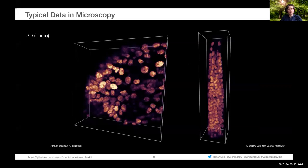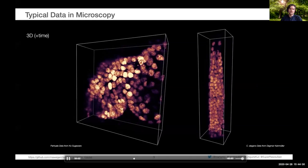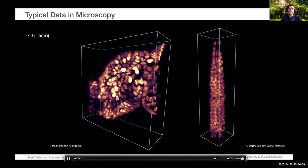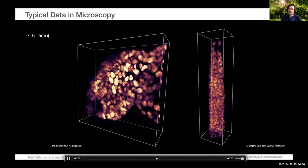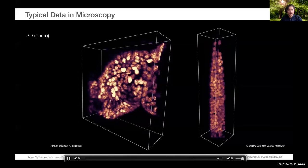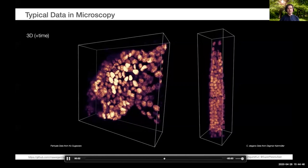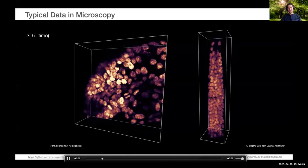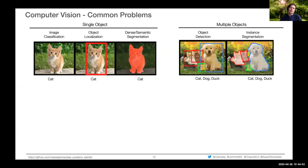The same challenges apply to 3D images. Most modern microscopy modalities allow 3D imaging of samples over time. Examples include evolving Varroa or a crustacean acquired by spinning disc confocal microscope, and C. elegans, where each individual thing is a cell nucleus in 3D. Segmenting them correctly in 3D is an extremely challenging but biologically important task.